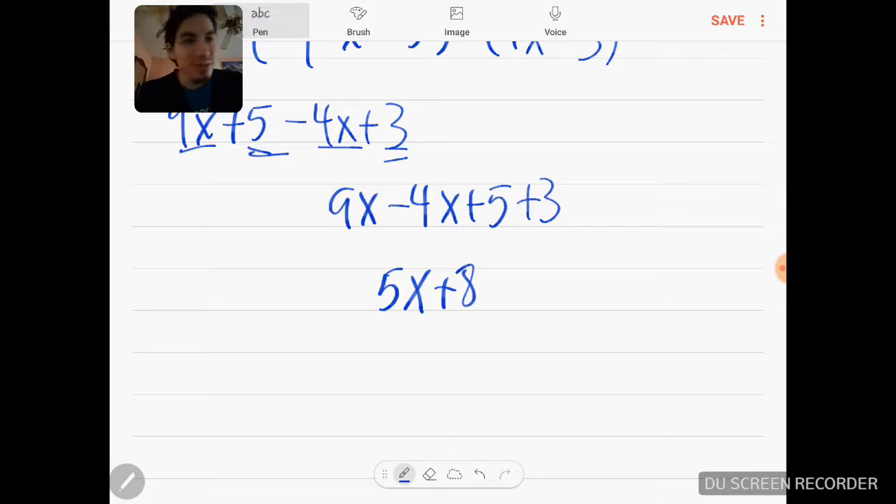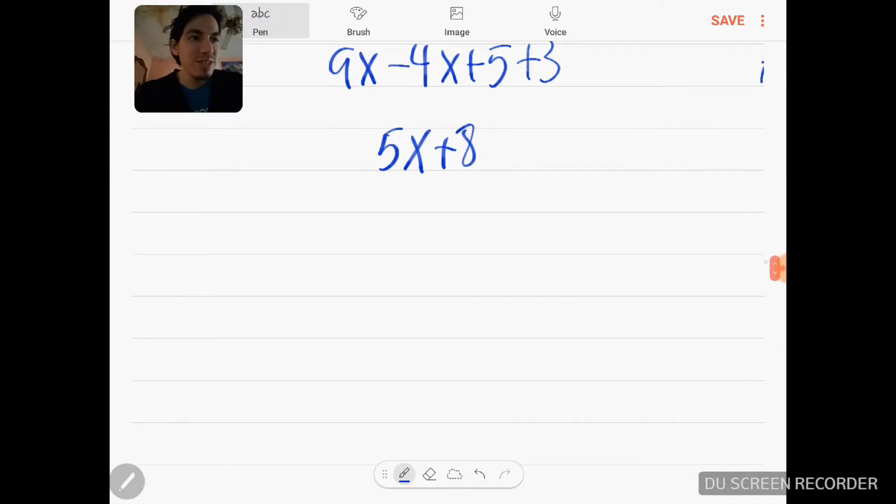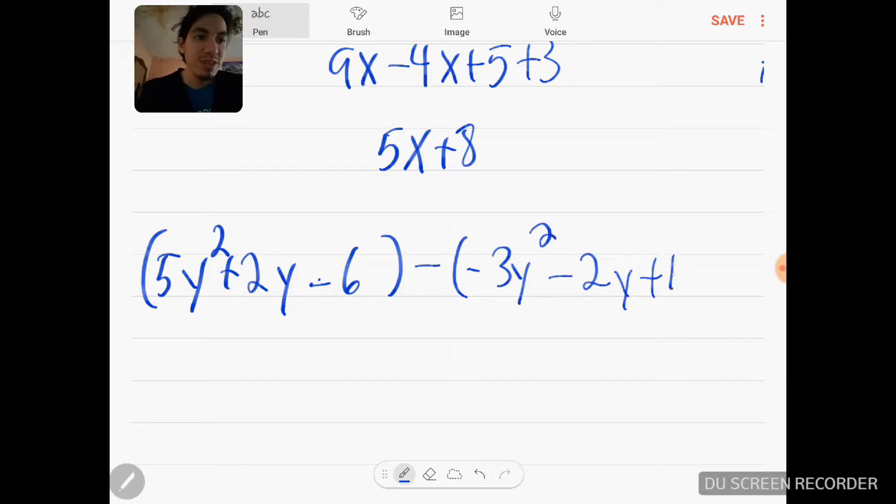Let's do a really hard one. This is a nice hard one so you guys could take notes on this one. So this is (5y² + 2y - 6) minus (-3y² - 2y + 11).